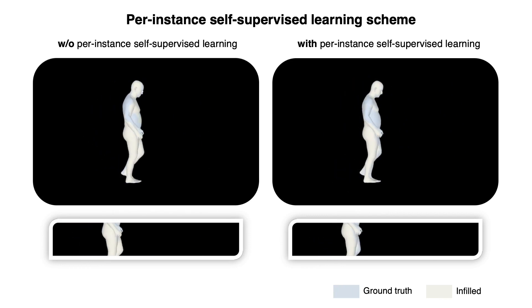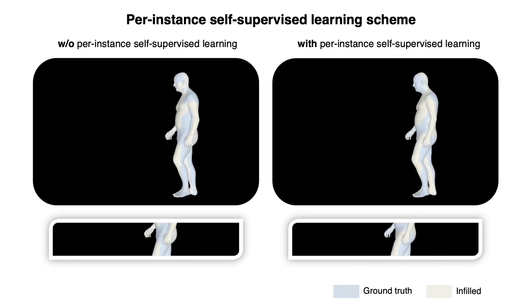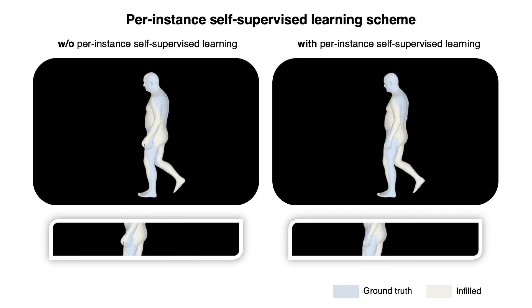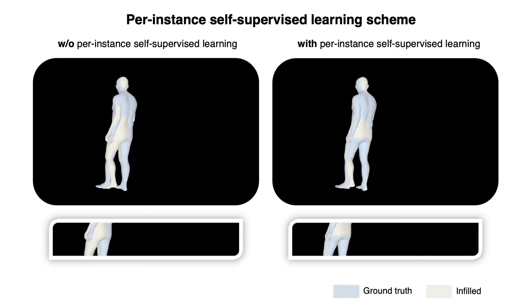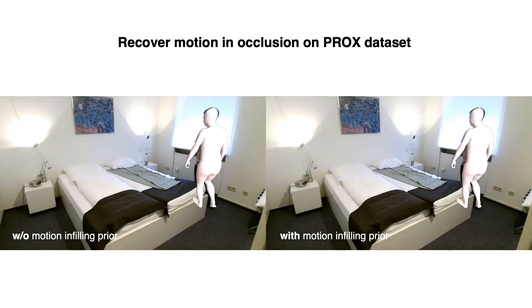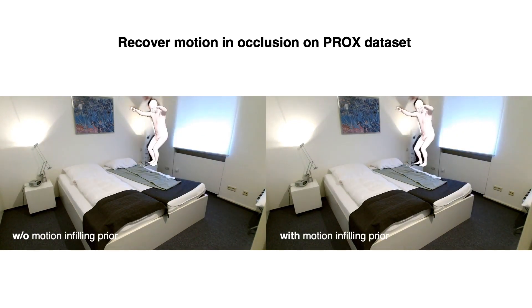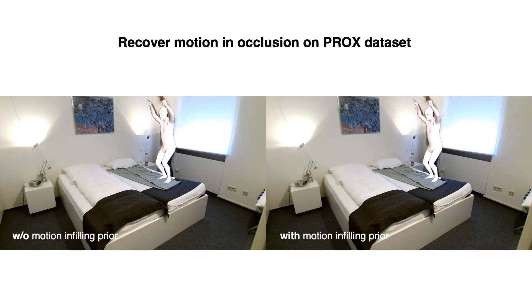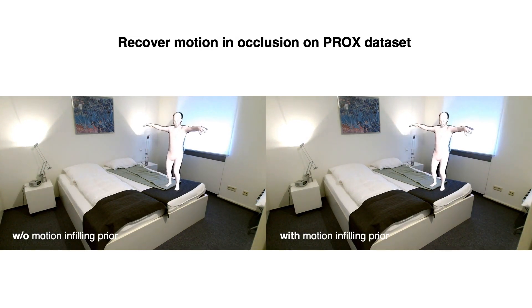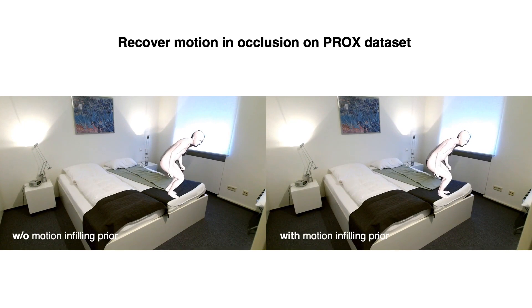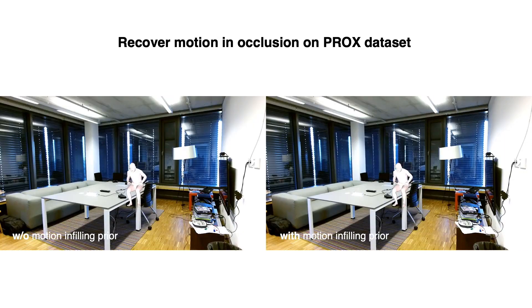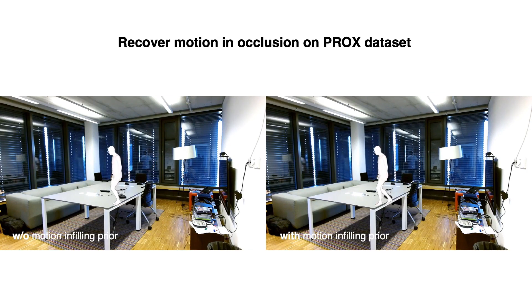In evaluation, 3D accuracy of full-body markers and joints is improved by 30%. In real-world occlusion cases on the PROX dataset, on the left side, foot skating occurs when the body is occluded by the bed or table without the motion infilling prior. But on the right side, natural motion dynamics are recovered for the lower body with our motion infilling prior.